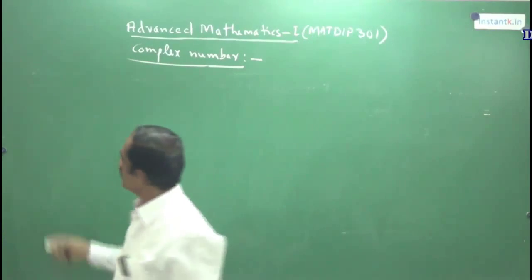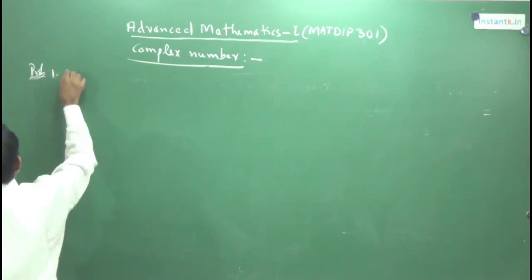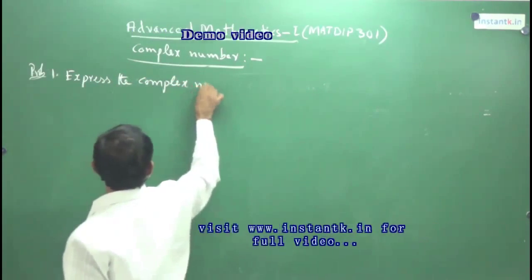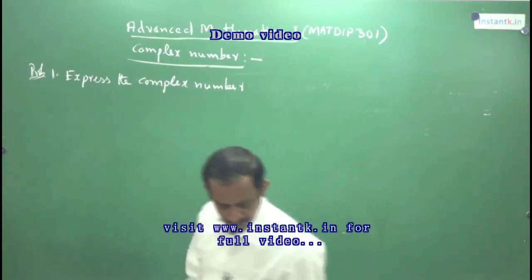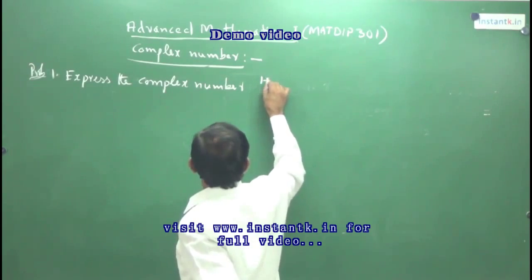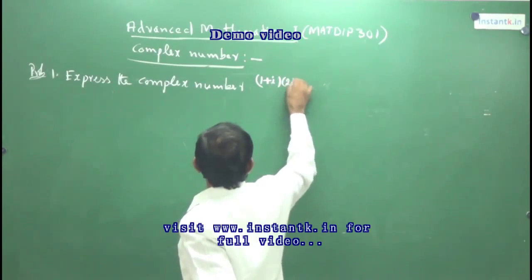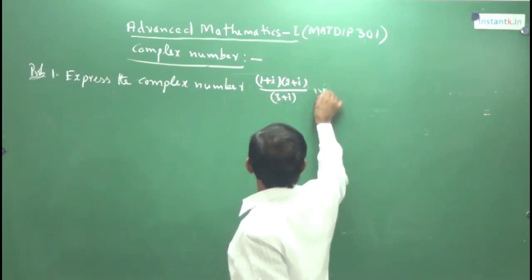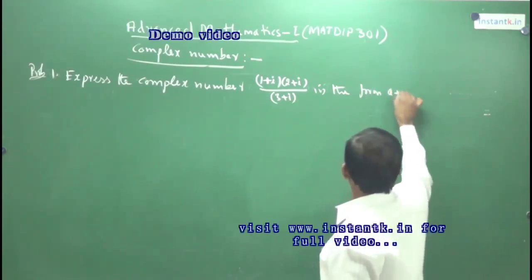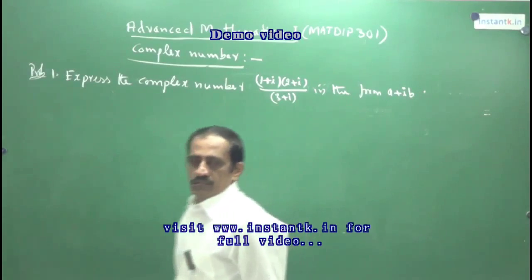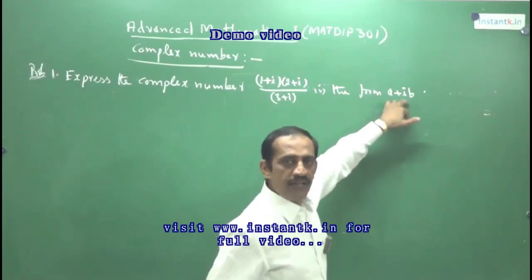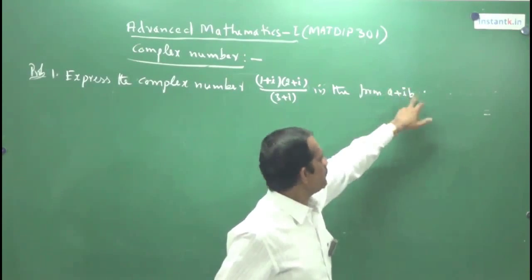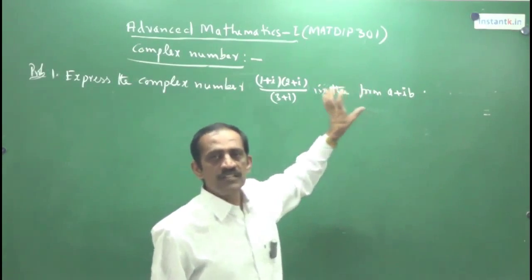There is a simple example. Express the complex number (1 + i) into (2 + i), divided by (3 + i). Sometimes, instead of writing the form x + iy, they may give it as: express the complex number in the form a + ib. This form of a complex number is called the standard form of the complex number.